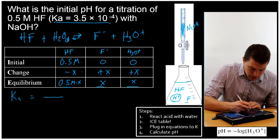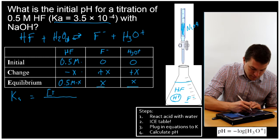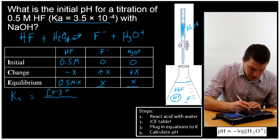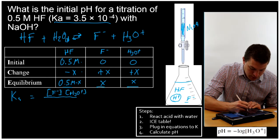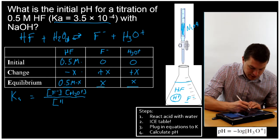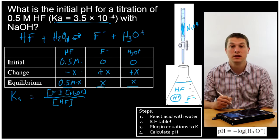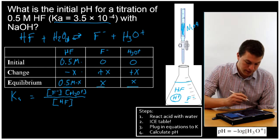Ka is equal to products over reactants, in this case my products are F- and H3O+. Remember that our products are always on the right side of our chemical equation. And our only reactant we're going to include is HF, and that's because H2O is liquid, so it's not included.